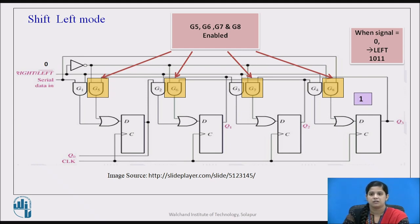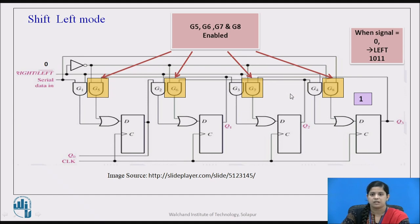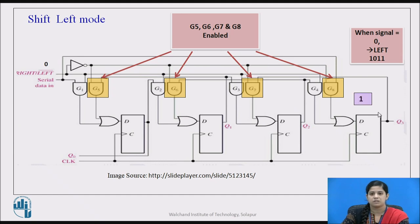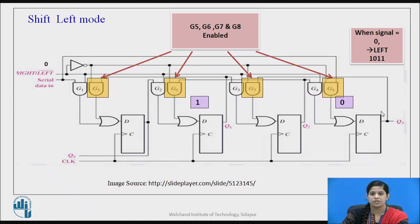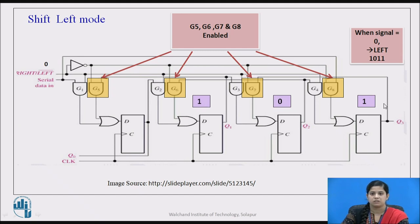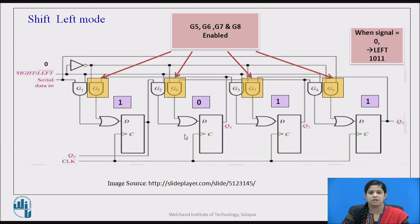At the first clock cycle, the input is given through the serial data input to gate G8, and the input is 1, so the output of this AND gate will be 1. This output is passed through the OR gate to the D flip-flop, resulting in output Q3 equals 1. According to the structure, the output is fed back to the input logic of the previous flip-flop. At the next clock pulse, the bit shifts left by 1 and a new bit appears at Q3. At the third clock pulse, the bit shifts left again — Q3's bit moves to Q2 and a new bit appears at Q3, giving output 1, 0, 1. The next clock pulse moves all bits left by 1 and finally we get 1, 0, 1, 1.